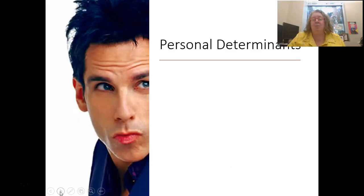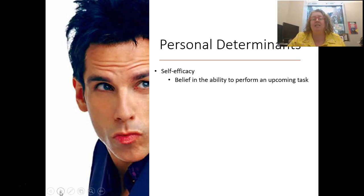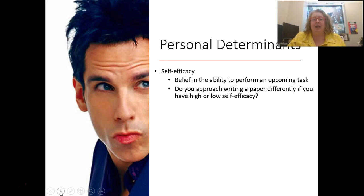Let's talk about some of those personal determinants. The biggest factor for Bandura in this model is the personal determinant of self-efficacy — my belief in my ability to perform a task. Do I think I can do it? Think about writing a paper. Do you approach it differently if you have high or low self-efficacy? If you think you can do the paper, are you more likely to just get started? How does it affect your motivation?